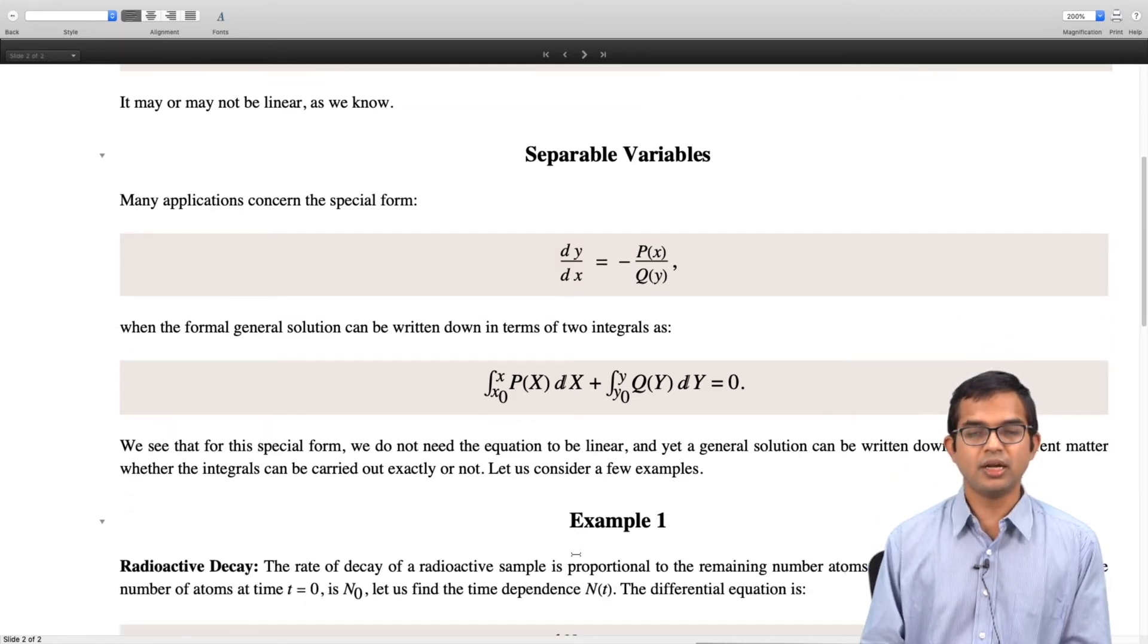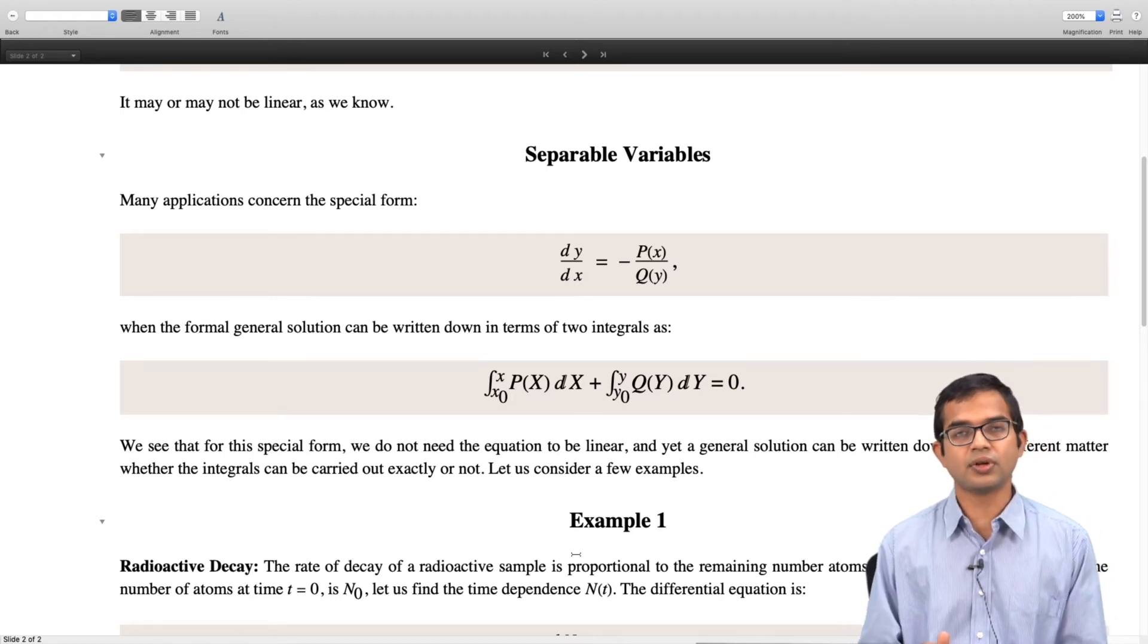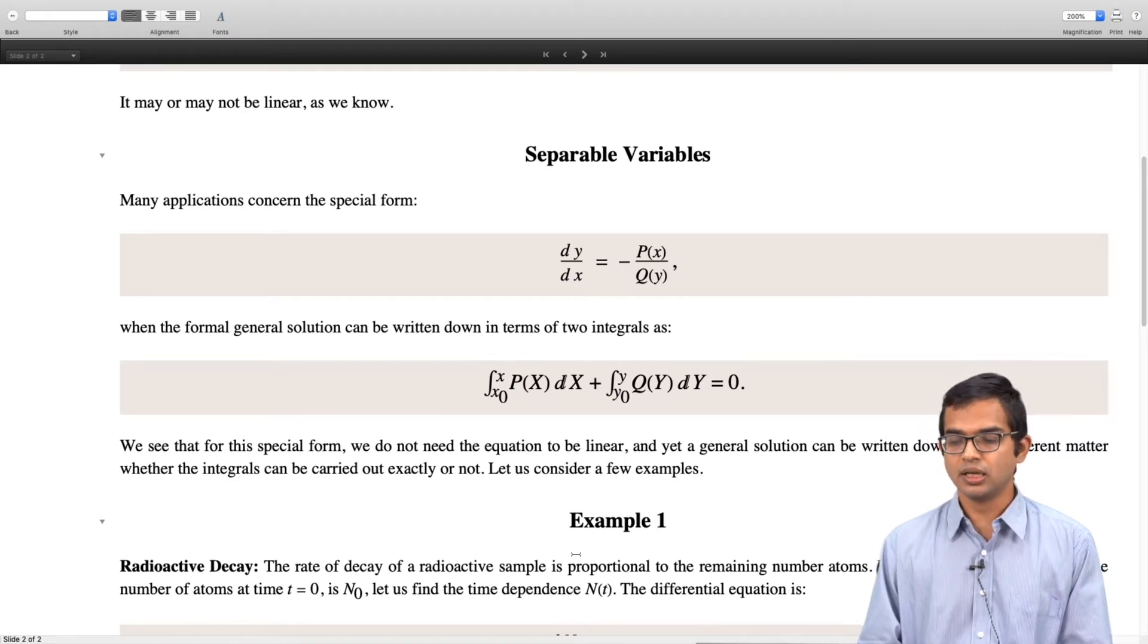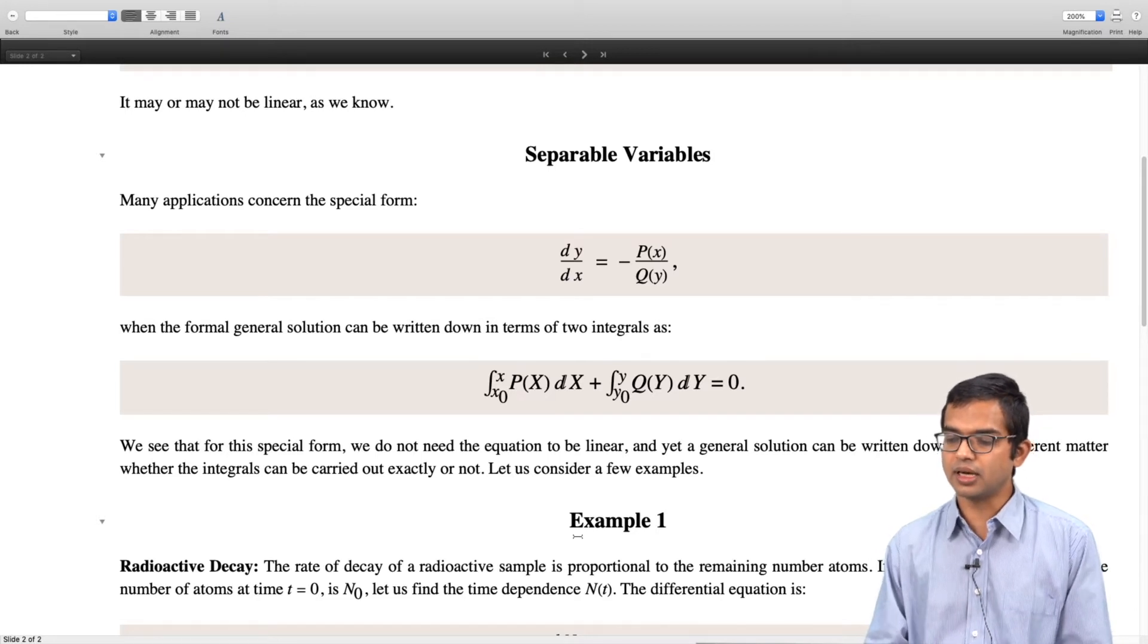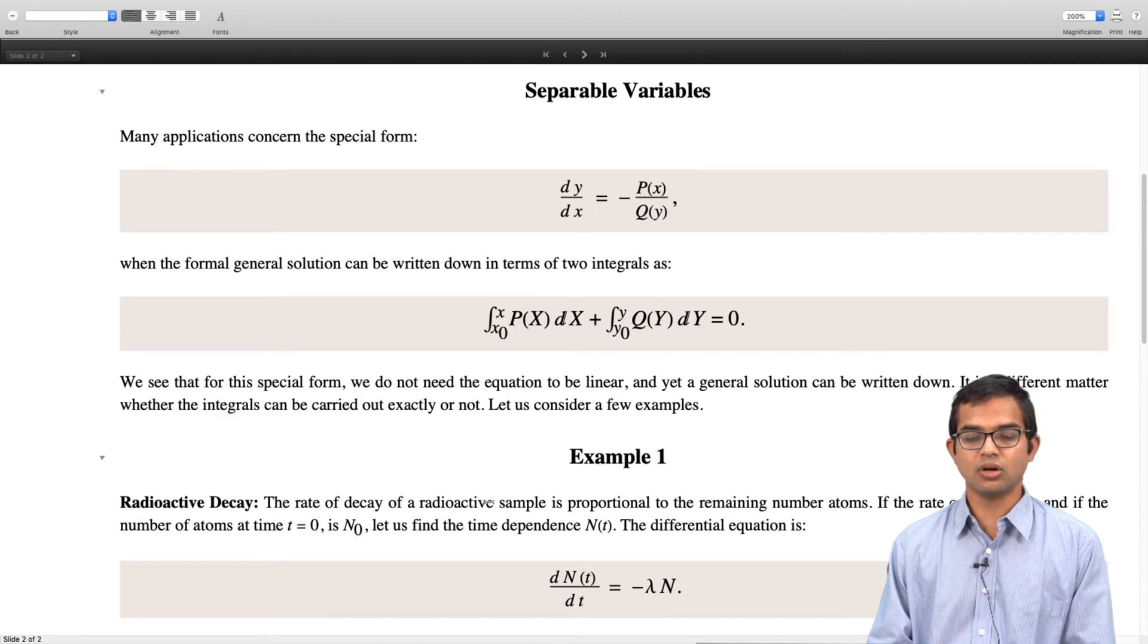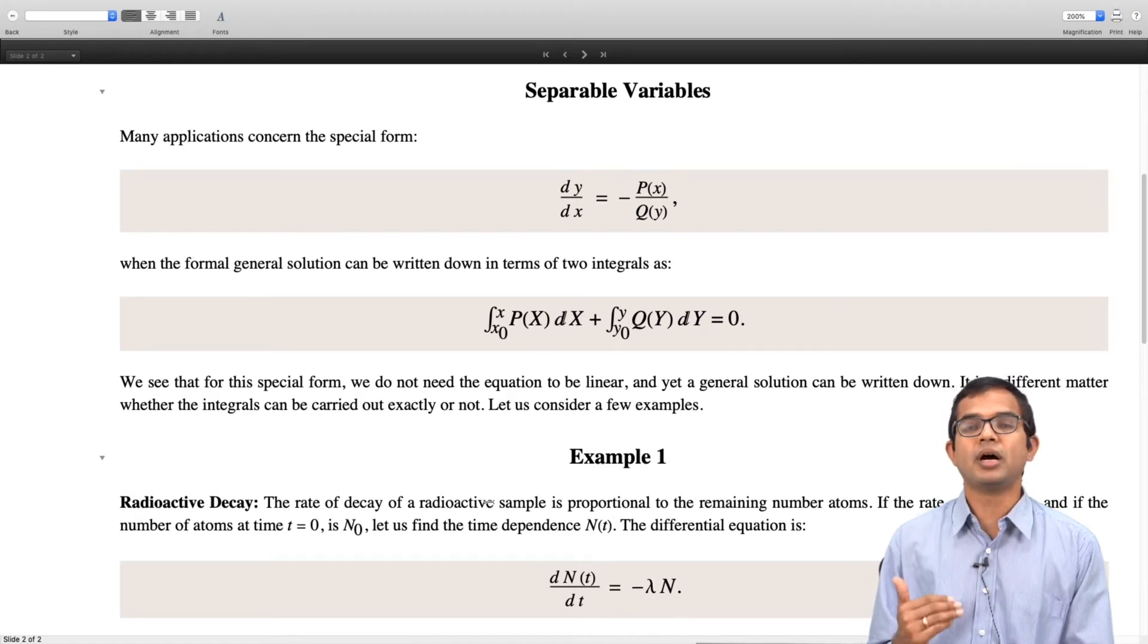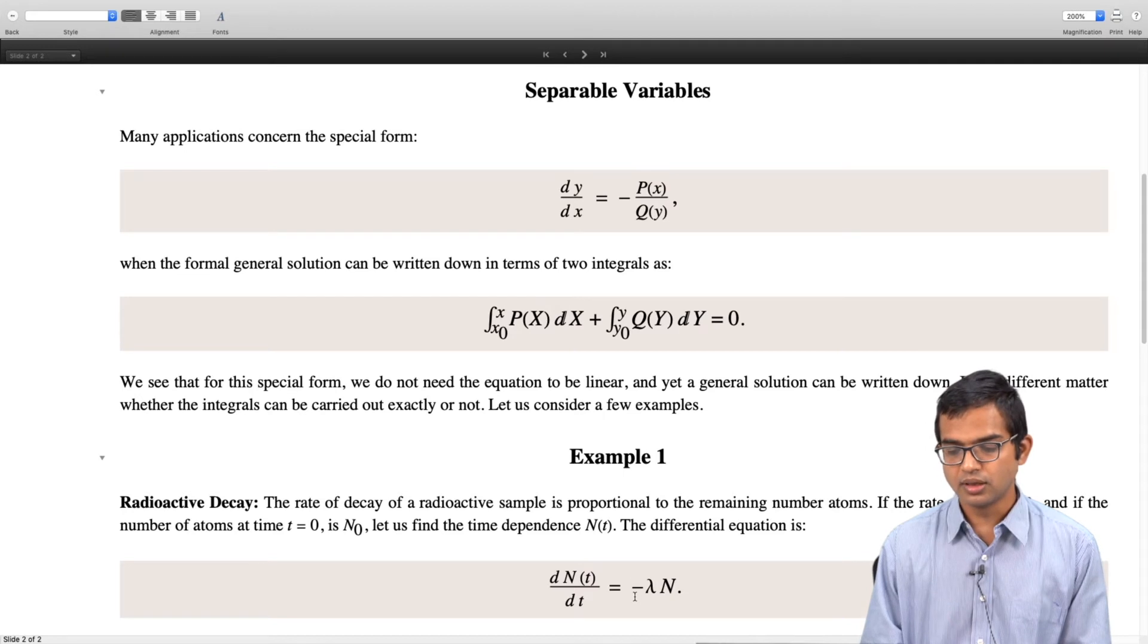Radioactive decay is a simple problem. The rate of decay of a radioactive sample is proportional to the remaining number of atoms. It keeps on reducing in number and so the rate also drops as a function of time. If the rate constant is λ and the number of atoms at time t=0 is N₀, let us find the dependence of N(t). The differential equation is given by dN/dt = -λN.